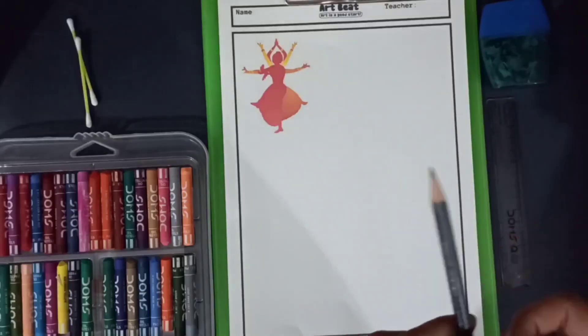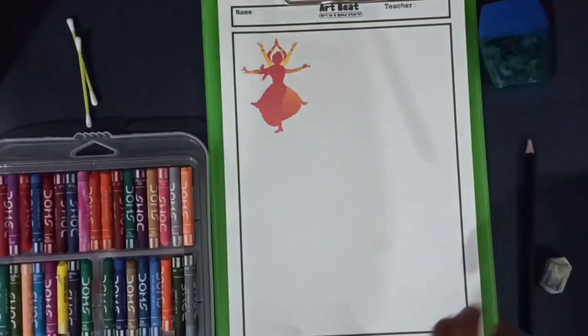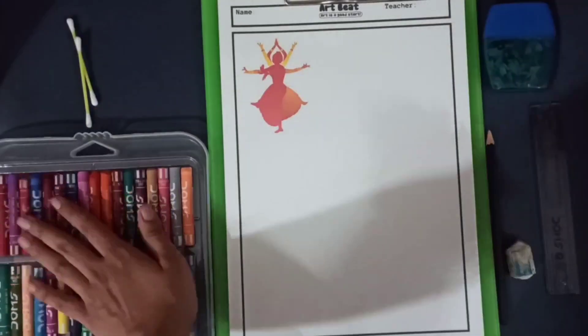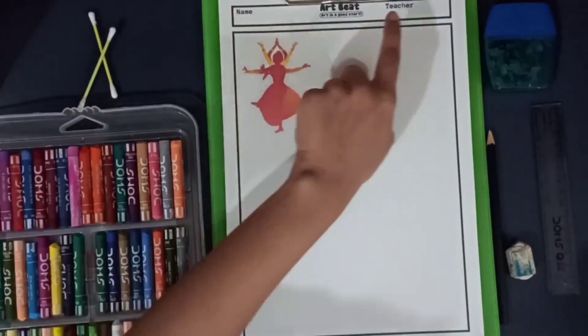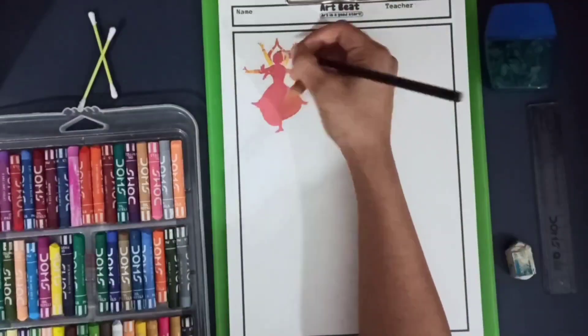In this worksheet, we are going to need our pencil, eraser, ruler, and sharpener, and we need our oil pastels and cotton buds to blend the oil pastels. Remember to write your name and the teacher's name.